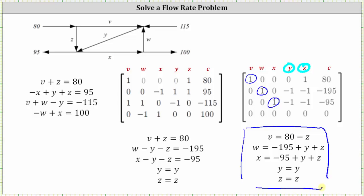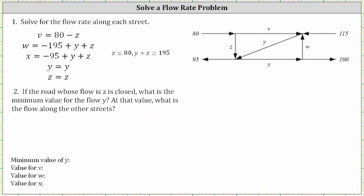Going back to the first slide, we now know the solution to the flow rate problem. However, there are restrictions — all flow rates must be non-negative. Looking at v equals 80 minus z, z must be less than or equal to 80 for v to be non-negative. Looking at the second equation, the sum y plus z must be greater than or equal to 195 for w to be non-negative, so we state that y plus z must be greater than or equal to 195.